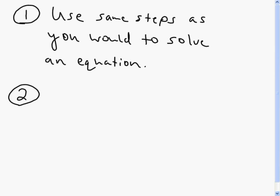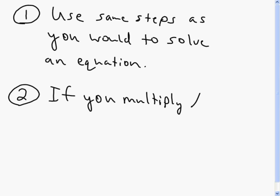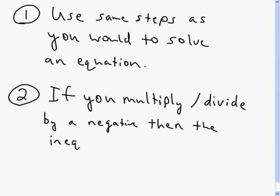The second thing to keep in mind: at the very last step, when you divide by the number in front of your variable to solve the inequality, if you ever multiply or divide by a negative number, then you have to reverse the inequality — it switches. So if it's less than, it becomes greater than, and vice versa. If it's less than or equal to, it becomes greater than or equal to, and vice versa. Be careful about that as you solve inequalities.